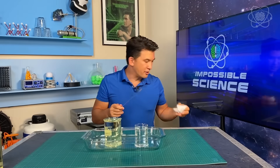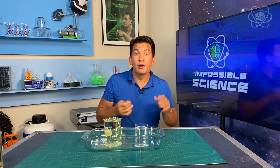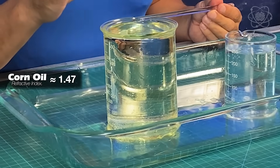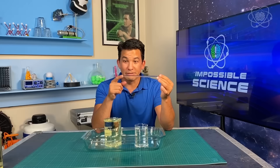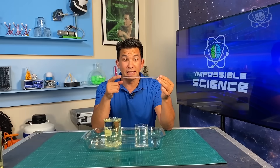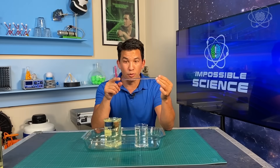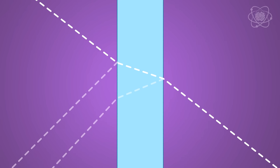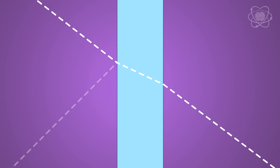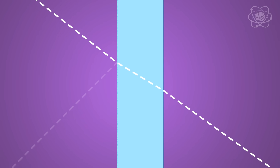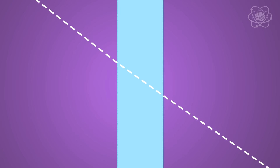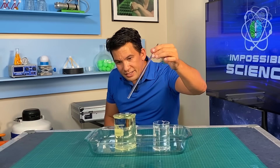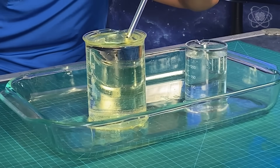Now in this other beaker I have corn oil. Corn oil has a refractive index of about 1.47 — sound familiar? This roughly has the same index as this borosilicate rod, which means there won't be a change in speed of light as light goes through this oil and through this rod. And if there is, it'll be very small and hard to see. So take a close look as this rod vanishes.